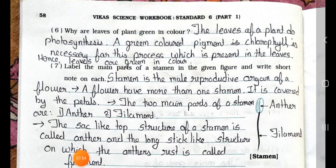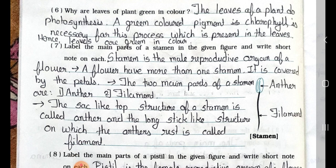Question 6: Why are leaves of a plant green in colour? Answer: The leaves of a plant do photosynthesis. A green-coloured pigment called chlorophyll is necessary for this process, which is present in the leaves. Hence, leaves are green in colour.